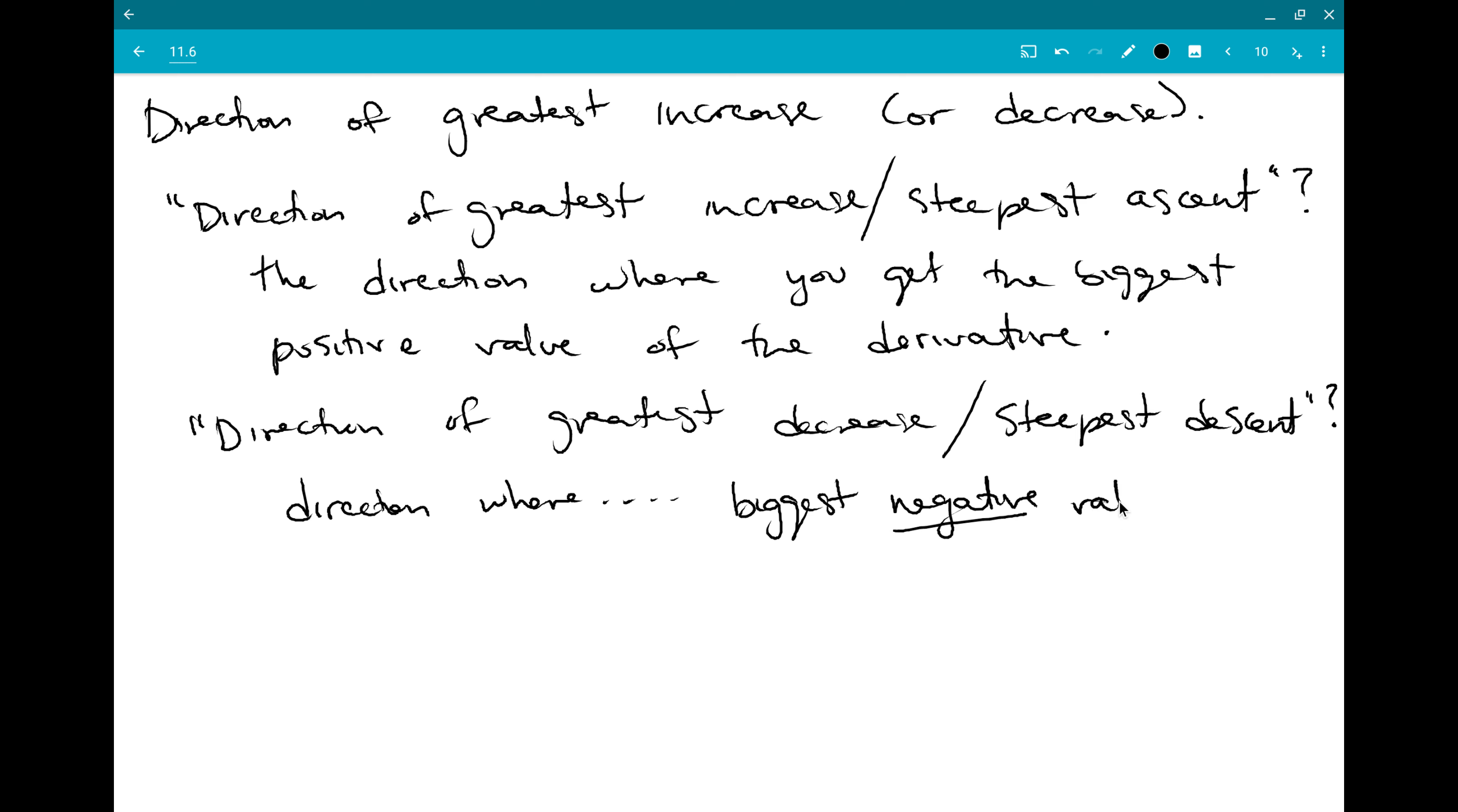biggest negative value of the derivative. Because we don't just want to be thinking about shallow versus steep. Greatest increase means very steep up. Greatest decrease means very steep down.